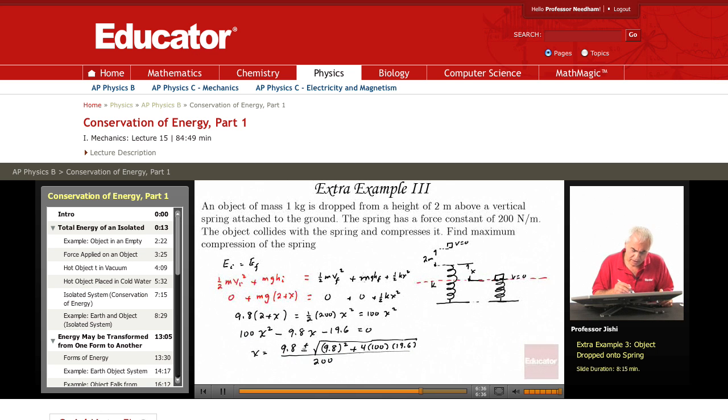Now, if I take the, notice this is 9.8 squared, the square root of 9.8 squared is 9.8. But then I'm adding something to it. So the square root is certainly larger than 9.8.